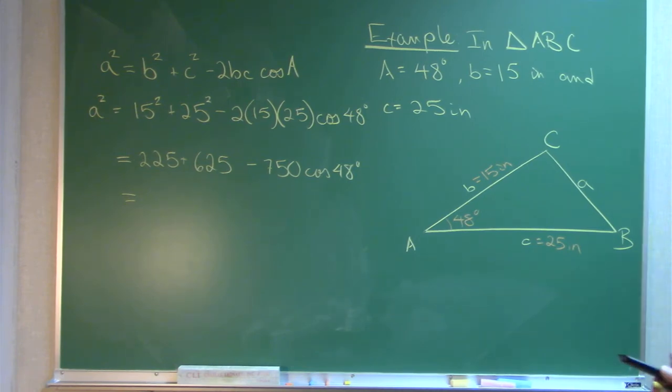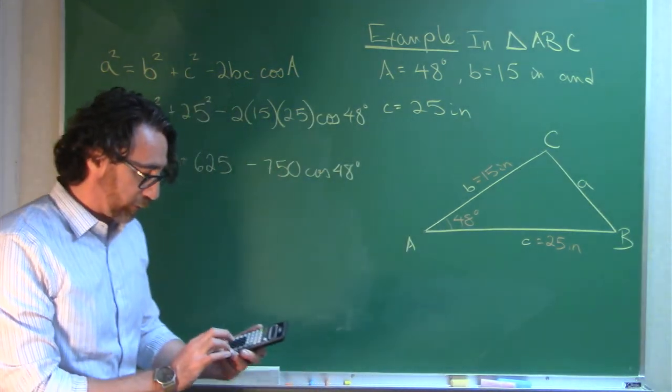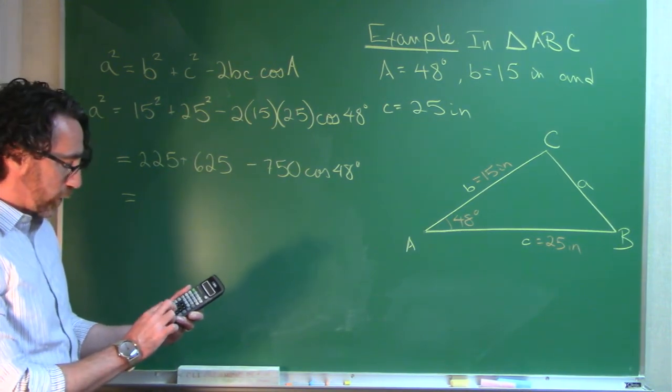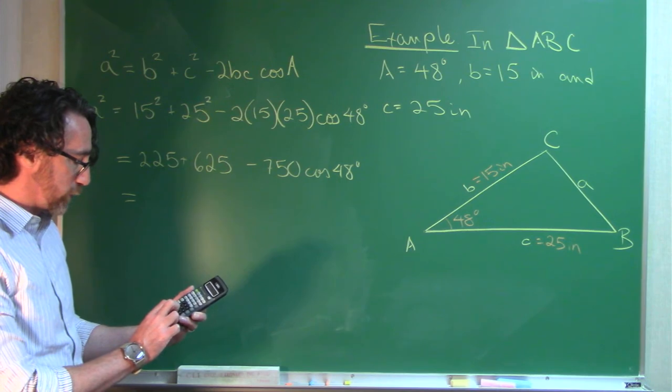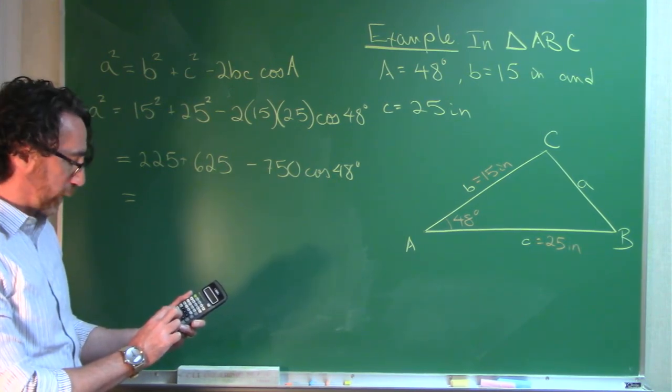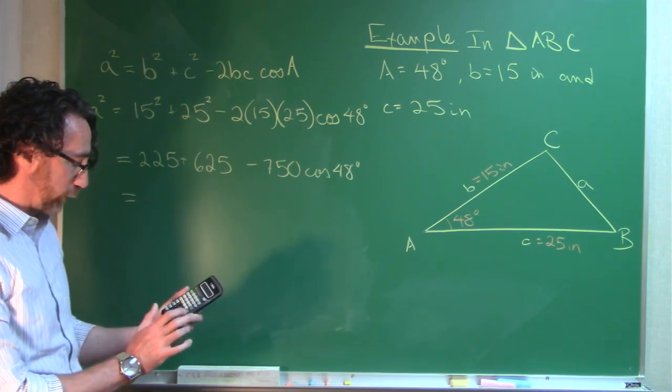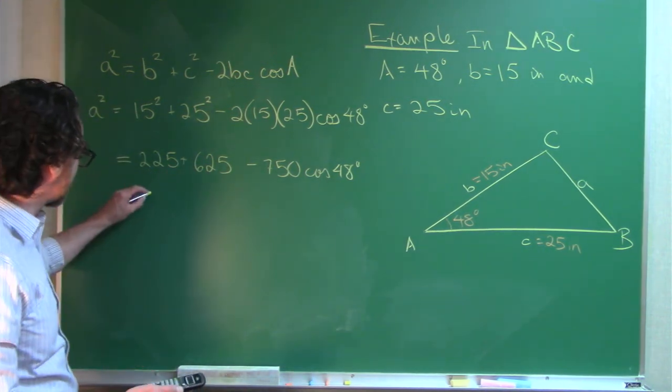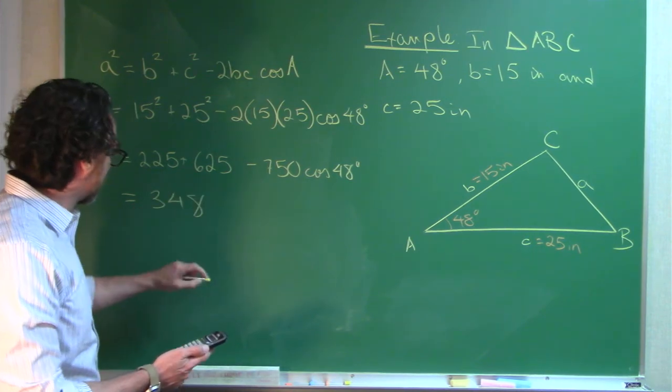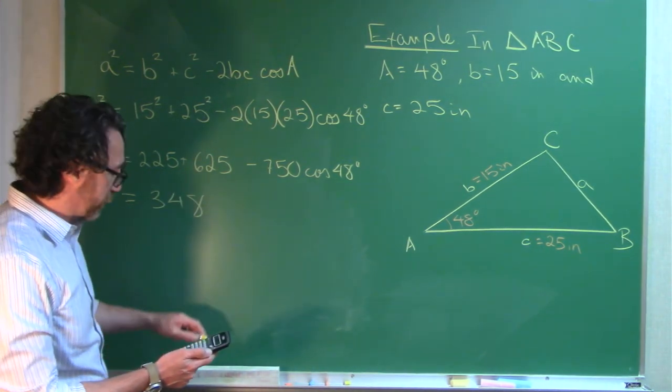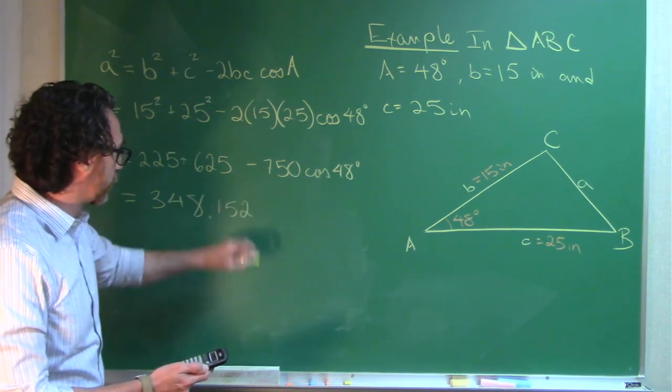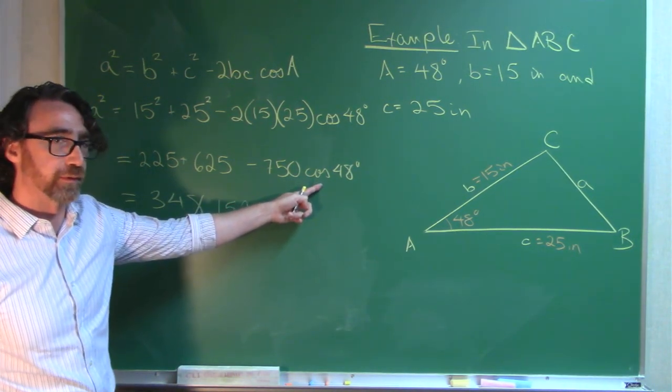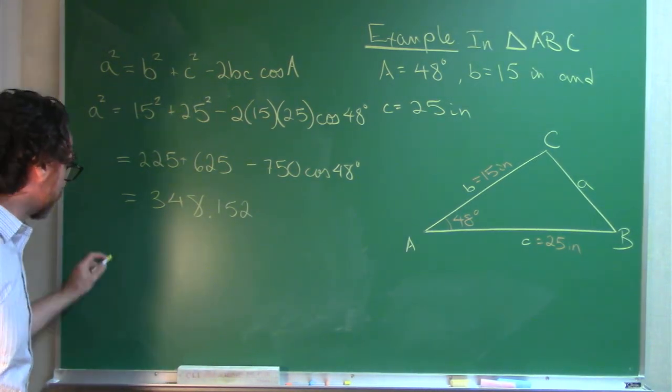So 15 squared, 225, plus 25 squared, 625, minus 2 times 15 times 25 times 48 cosine equals. I'm getting 348.152. So that's what A squared is.